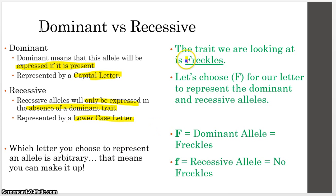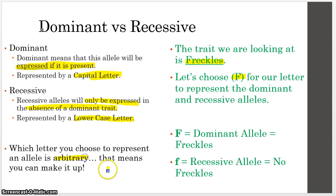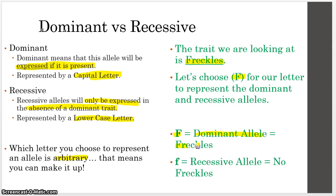The trait we're looking at is freckles. Let's choose the letter F to represent the alleles for freckles. The letter you choose is arbitrary. So capital F will be the dominant allele, meaning you have freckles. Lowercase f will be the recessive allele, meaning you don't have freckles.